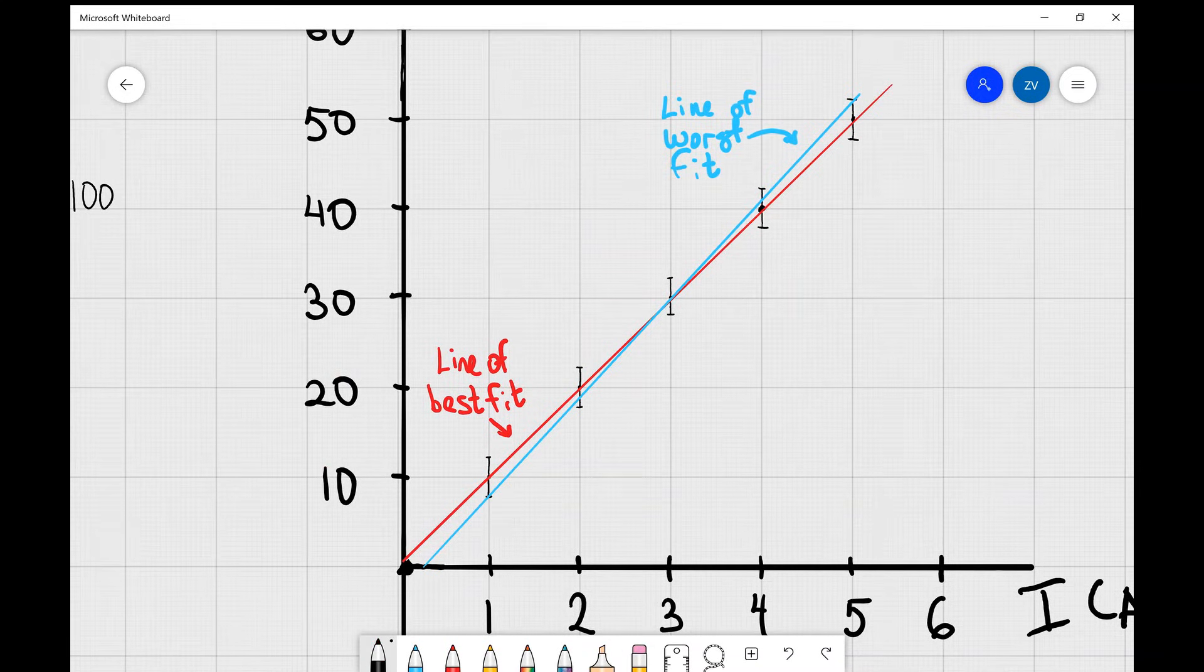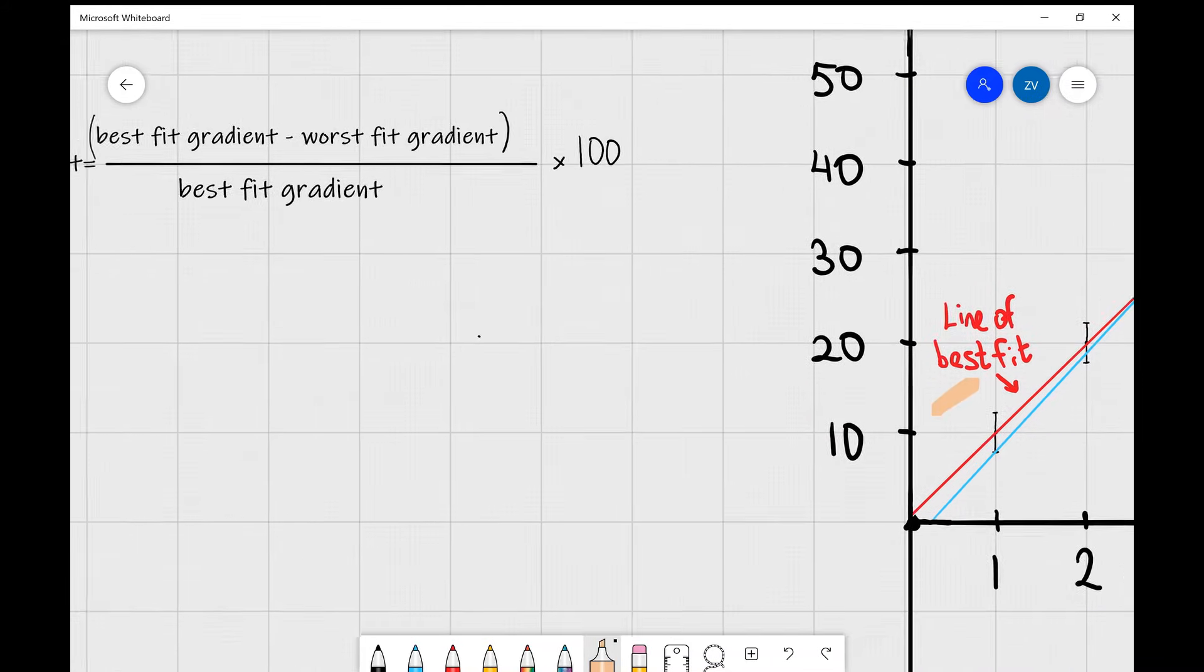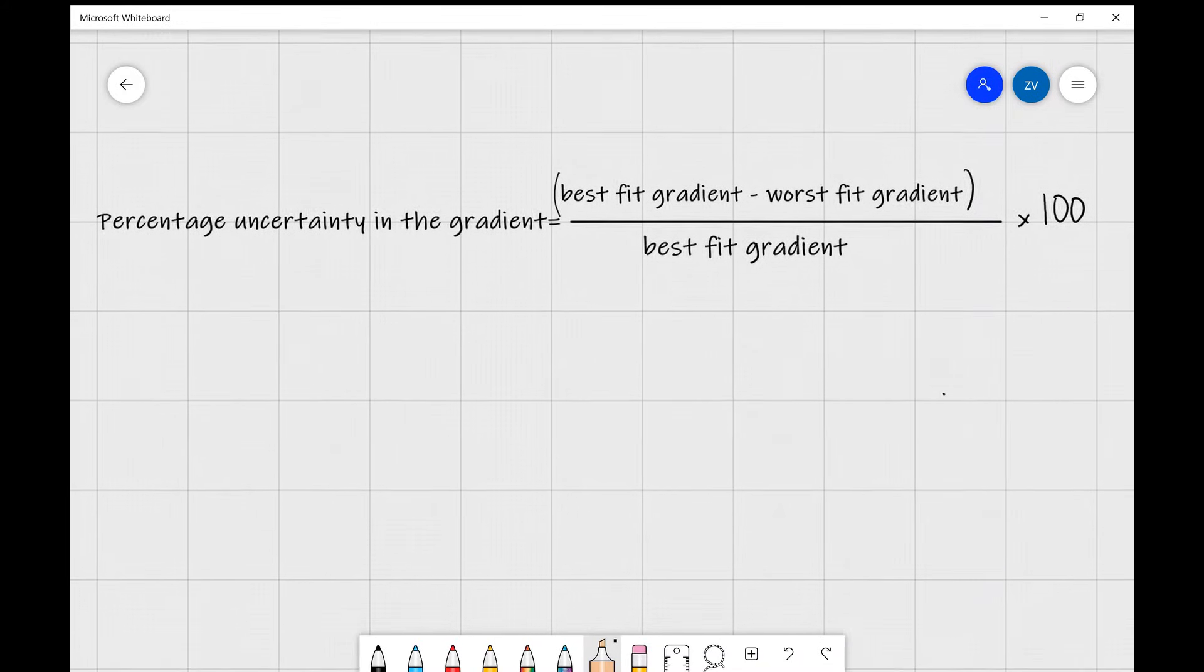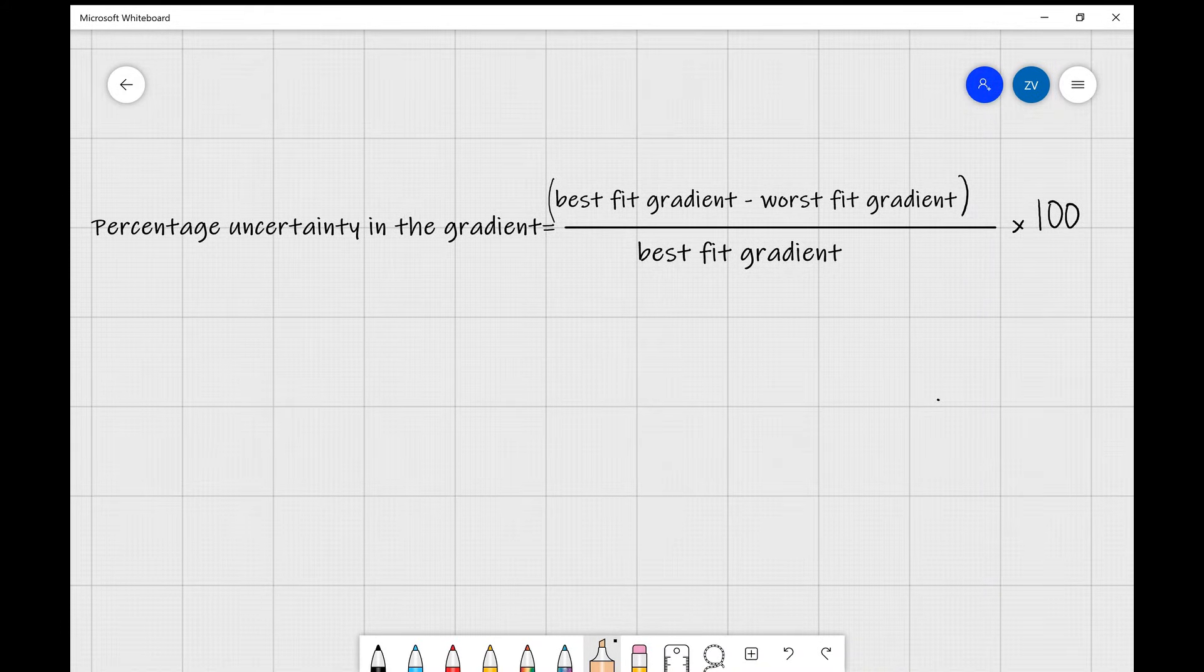Now that we have the line of best fit and additionally we also have the line of worst fit, how do we actually calculate the percentage uncertainty in the gradient? Well, the formula is that the percentage uncertainty in the gradient is equal to the gradient of the line of best fit minus the gradient of the line of worst fit divided by the gradient of the line of best fit times 100. And this is a formula we'll need to remember for the exam.